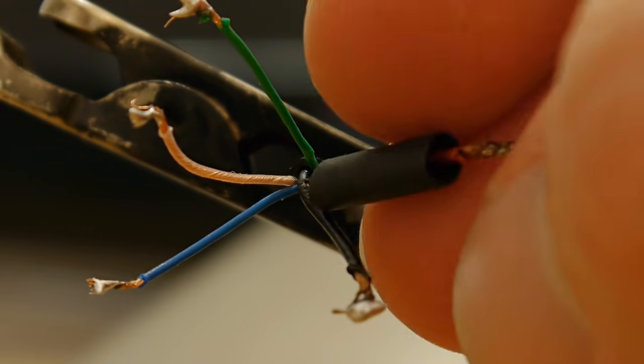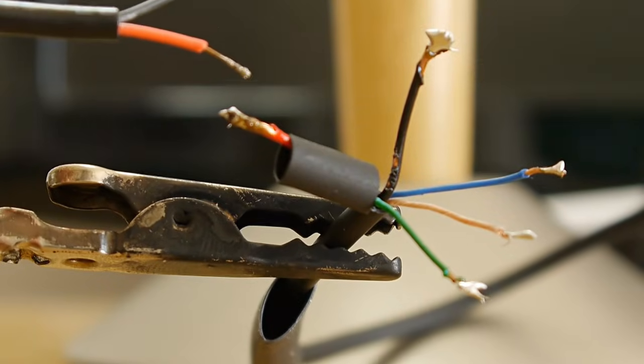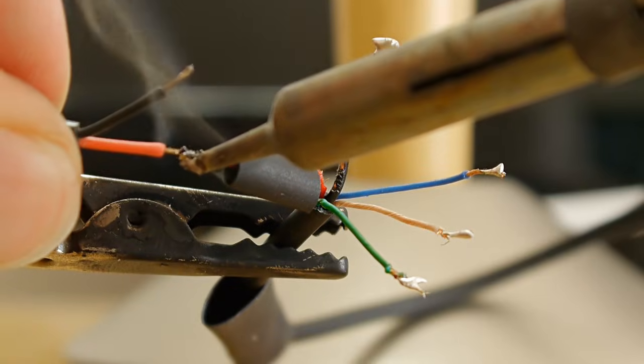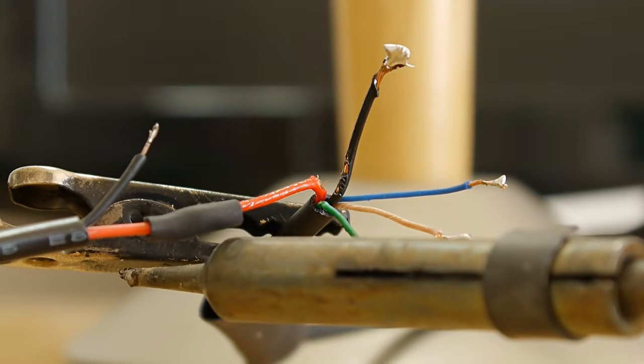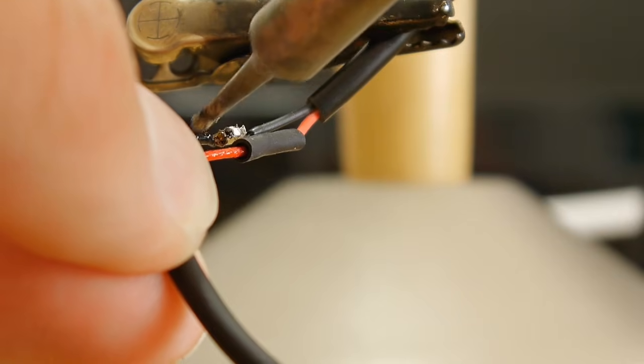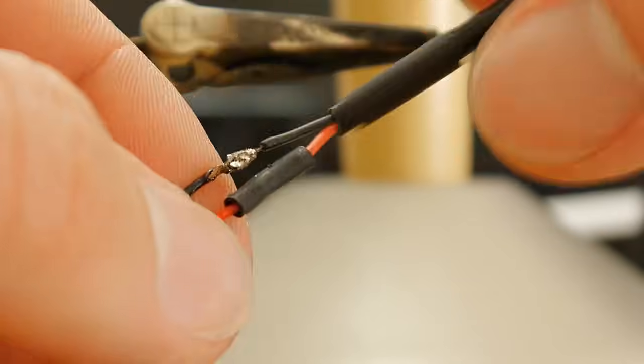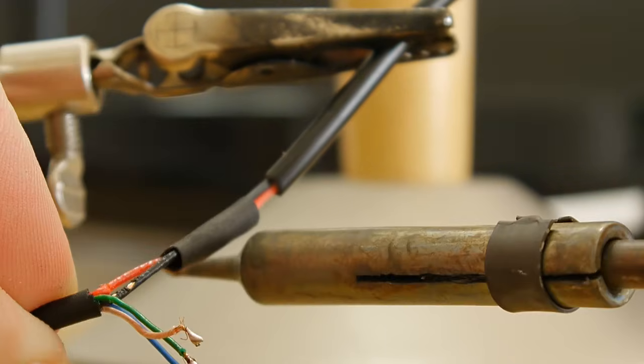After threading on a short length of heat shrink to the input cable's red wire, get your USB cable and solder its red wire to the input cable's red wire. Use your soldering iron to activate the heat shrink. Solder the USB cable's black wire to the input cable's black wire. Bring back the heat shrink we added earlier and shrink it.